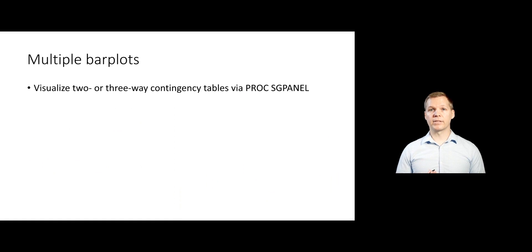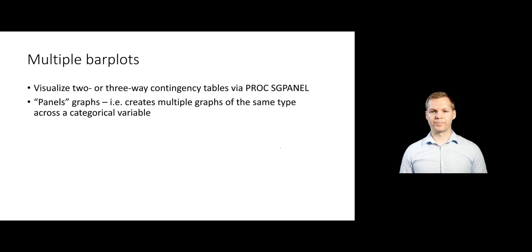Now, before, when we looked at our three-way contingency tables, we had to break those up into basically conditional two-by-two tables and look at them separately. And that wasn't necessarily ideal. It wasn't easy to compare across those different two-way tables. If we want to do the same thing here graphically, we can use PROC SGPANEL instead to create multiple bar plots. So what SGPANEL does generically is it panels graphs. So it creates the same graph that you're doing, but at every setting of some other variable.